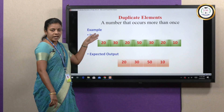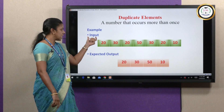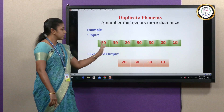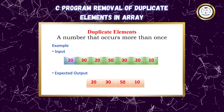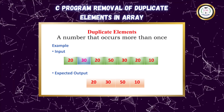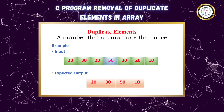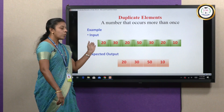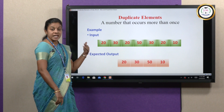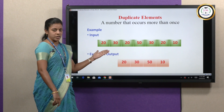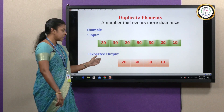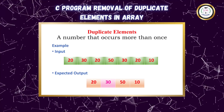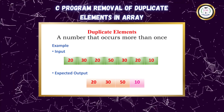For an example, if the input is 20, 30, 20, 50, 30, 20, and 10, what could be our expected output? Our expected output is 20, 30, 50, 10.